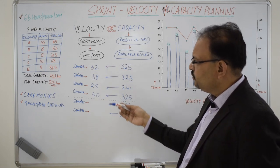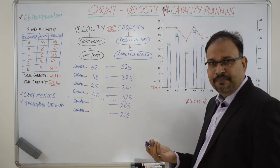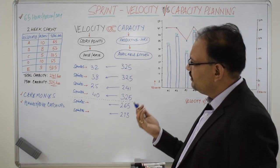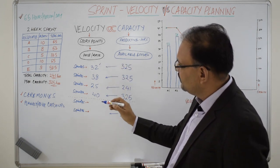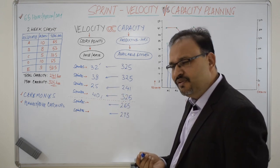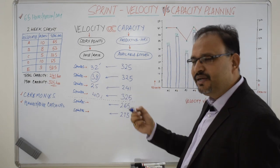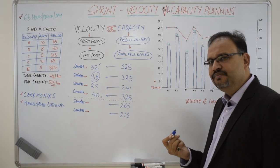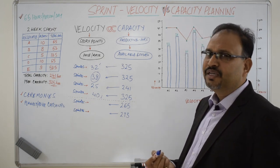What we can do is we can take the average out of this velocity and figure out the velocity of the team. Or to be more realistic what we can do is we can ignore the lower end side of it and the higher end side of it and we can go with the middle figure of the velocity that is 38. So 38 becomes the velocity of the team based on which we can make predictions for the upcoming sprints as long as we know the capacity of the team.